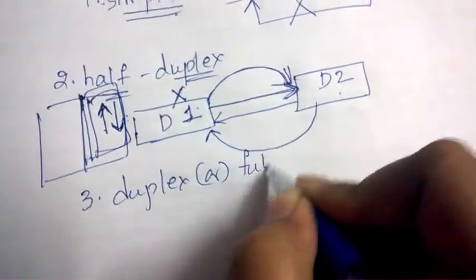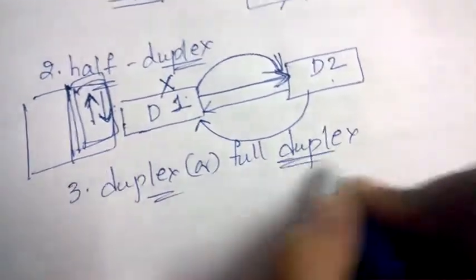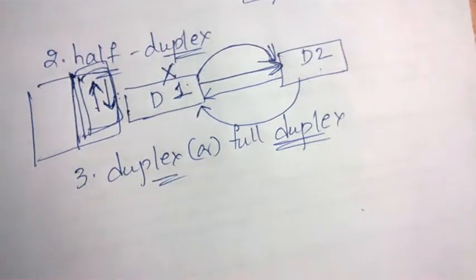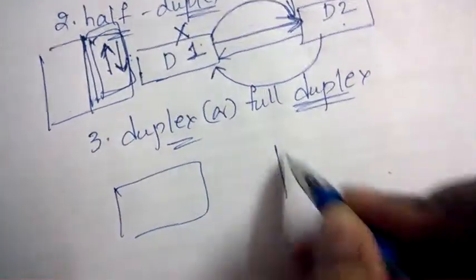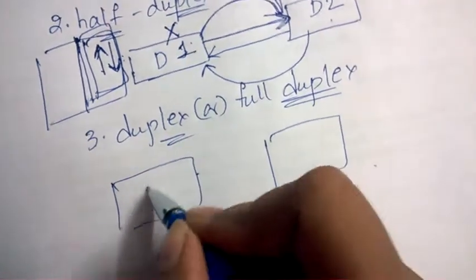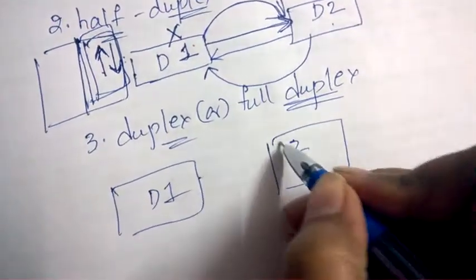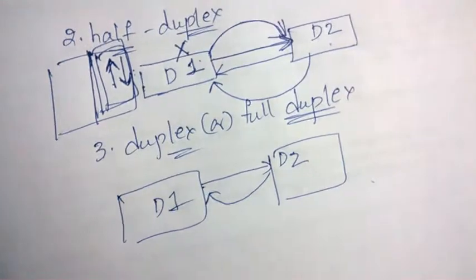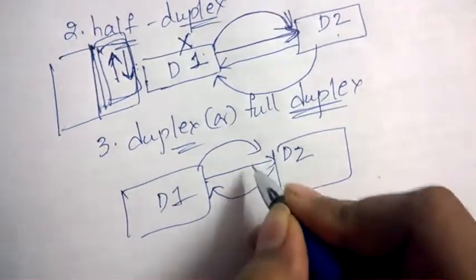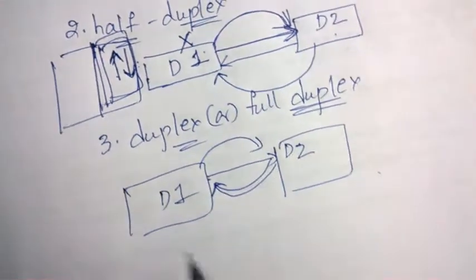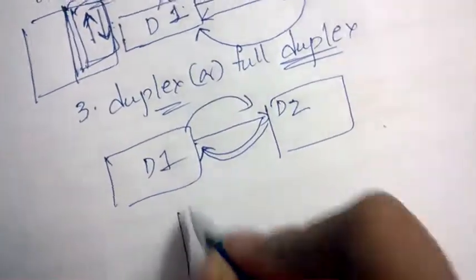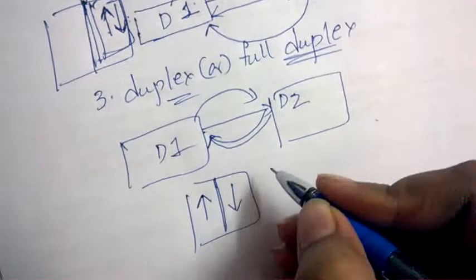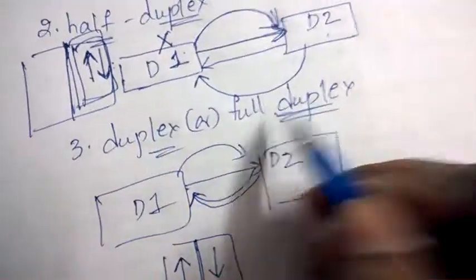The third type is full duplex, also simply called duplex. In full duplex, there are two devices — device one and device two. Device one can send data and at the same time receive data. Both devices can send and receive simultaneously. This is like a two-way road where vehicles can go in both directions at the same time. This is the example of full duplex.